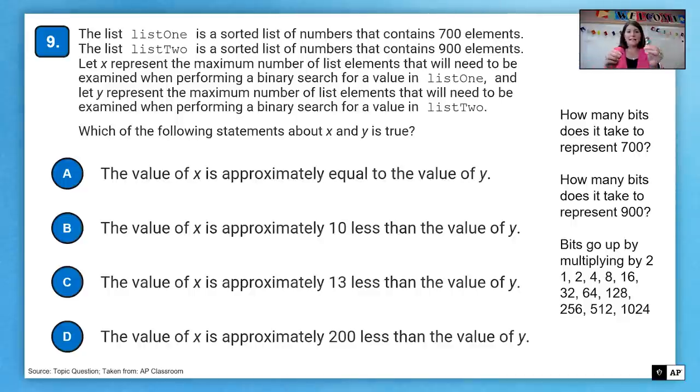So if we look at the answer choices here, we see we're looking at is X and Y equal? Are they approximately 10 less, 13 less, or 200 less? So again, we're talking about binary search. You can determine how many checks a binary search has by figuring out how many bits does it take to represent the total number of elements in the list. So since 700 and 900 are both between 512 and 1024, that means it's going to take approximately the same amount of checks.